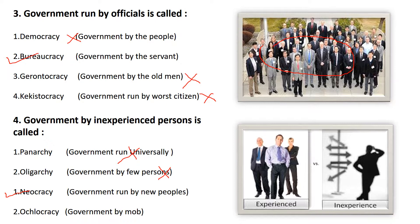Gerontocracy means government by old men — that is not the answer here. Kakistocracy means government run by bad citizens — a government run by bad people. Next: government by an inexperienced person means a government done by new people. New people are also inexperienced persons. Panarchy means government run universally — that is not the answer.